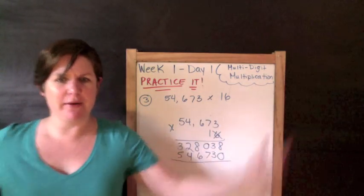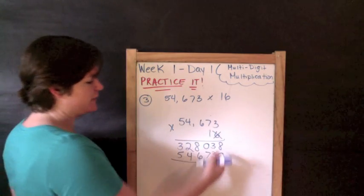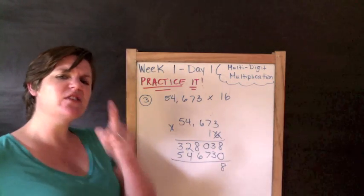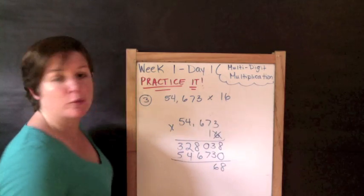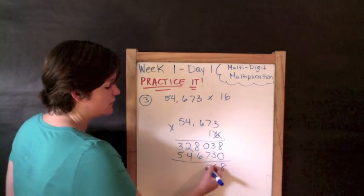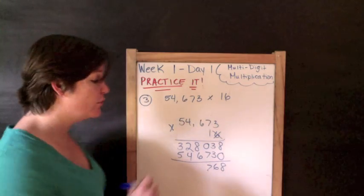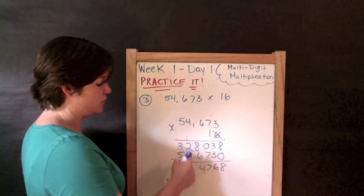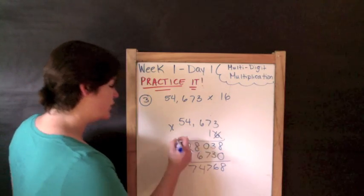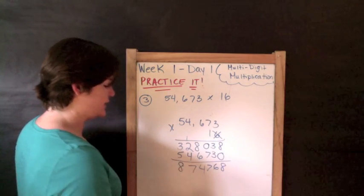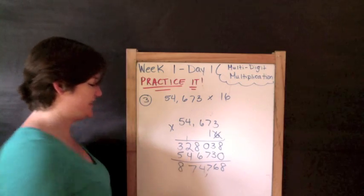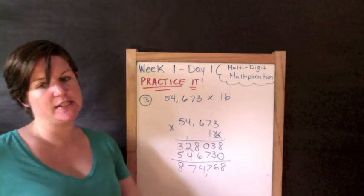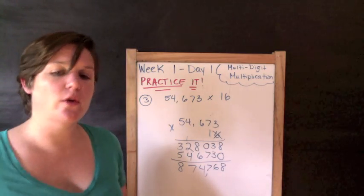I add them together. Eight plus zero is eight. Three plus three is six. Zero plus seven is seven. Eight plus six is fourteen. Carry my one, bring down the four. One plus two plus four is seven. Three plus five is eight. So it's eight hundred seventy-four thousand seven hundred sixty-eight is your answer.